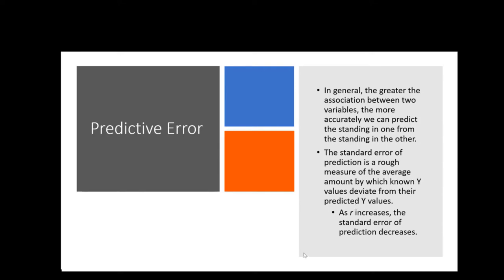Let's talk about predictive error. When we are thinking about predicting our outcome variable from another variable, we have to understand that we won't be 100% correct. The better the relationship is between the two, the less error we will make. In general, the greater the association between two variables, the more accurately we can predict one from the other.